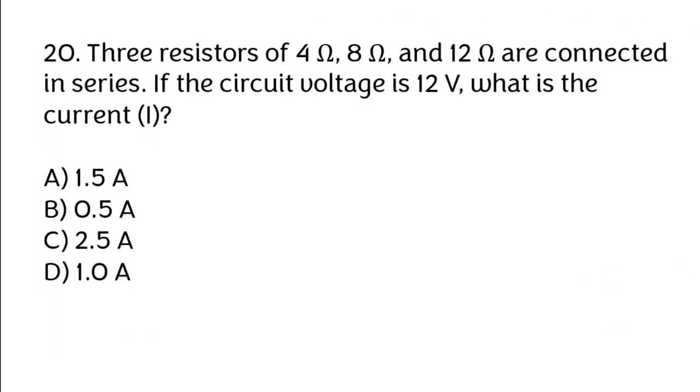Three resistors of 4 ohms, 8 ohms and 12 ohms are connected in series. If the circuit voltage is 12V, what is the current? A. 1.5 ampere, B. 0.5 ampere, C. 2.5 ampere, D. 1.0 ampere. Correct answer is B. 0.5 ampere.